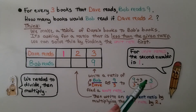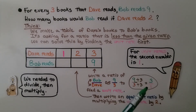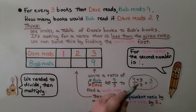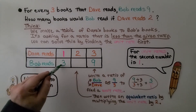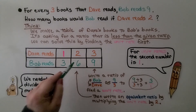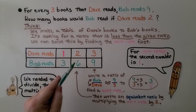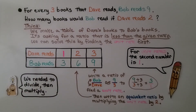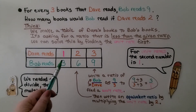Our unit rate is 3 over 1 — that means Bob reads 3 for every 1 Dave reads. Then we write an equivalent ratio by multiplying the unit rate by 2: 1 times 2 is 2, and 3 times 2 is 6. We know that Bob would read 6 books if Dave reads 2. So we needed to divide to get the unit rate, then multiply to find this new rate. We found an equivalent ratio by multiplying the unit rate by 2.